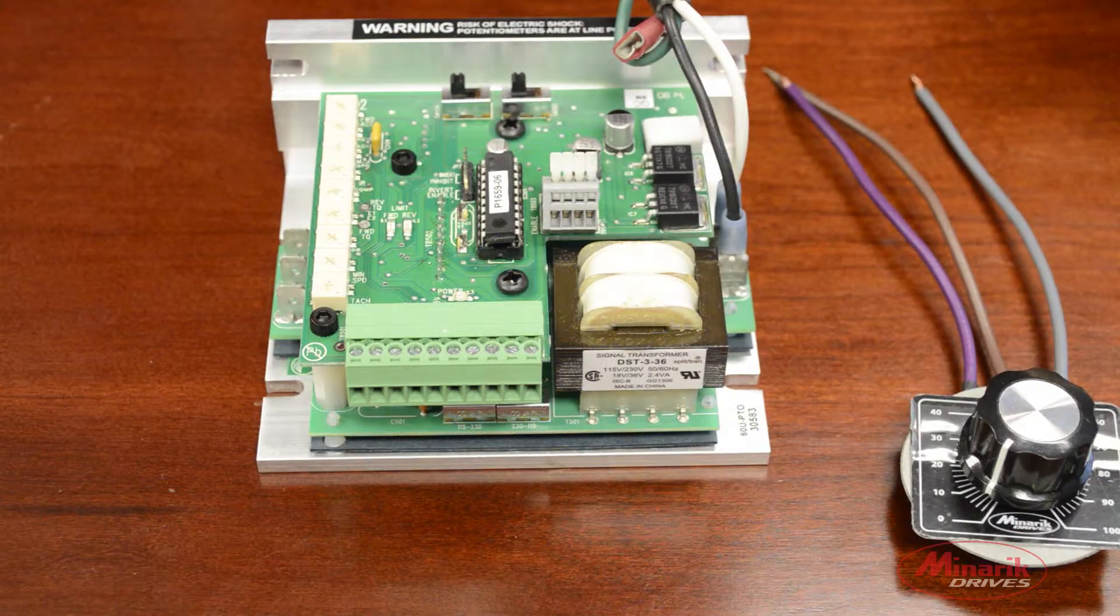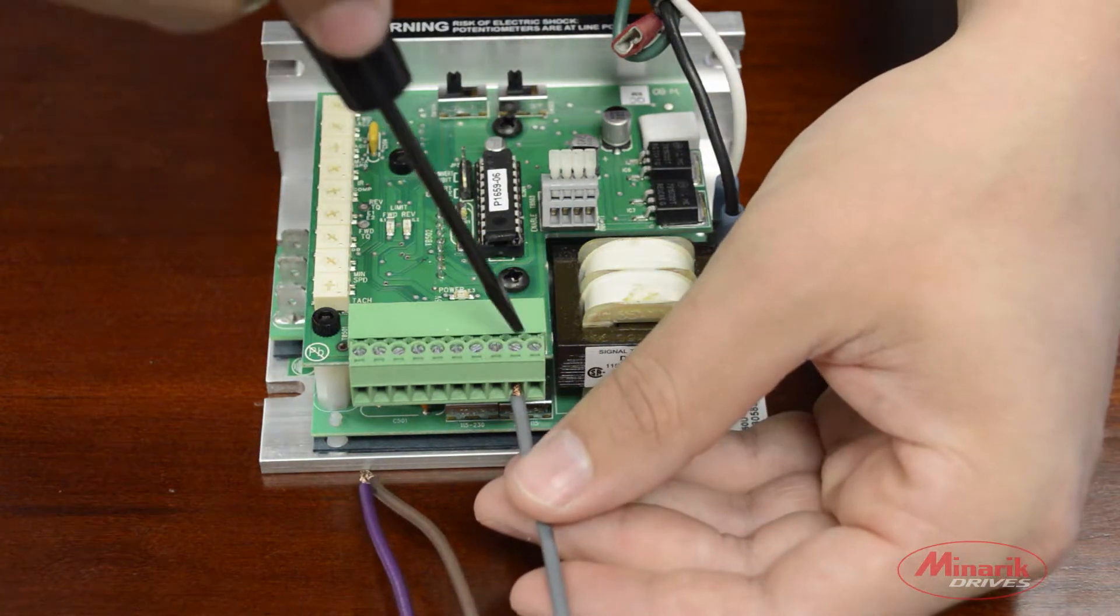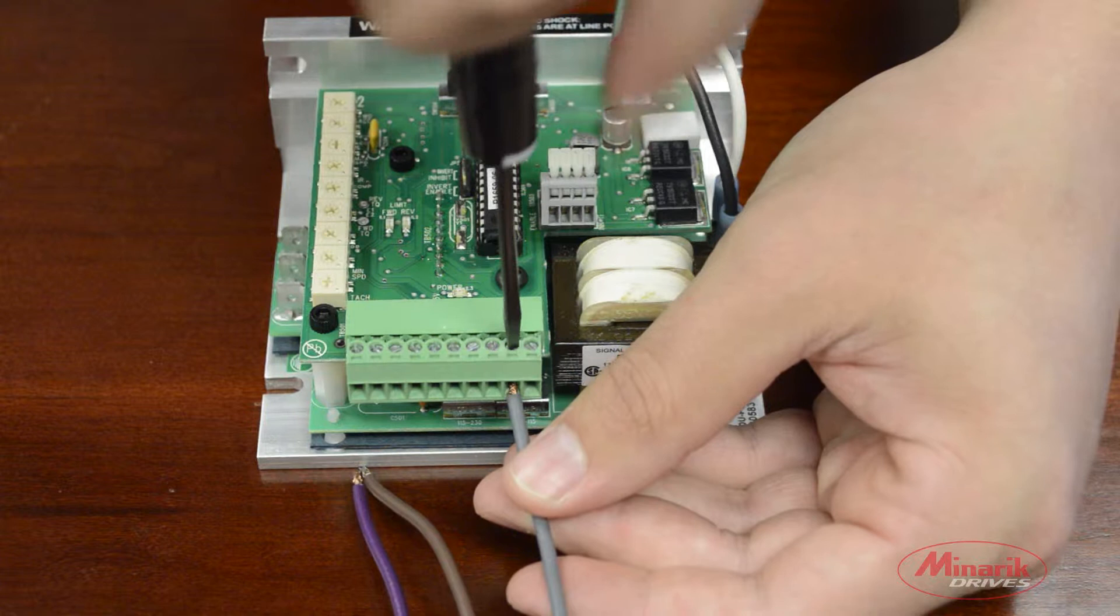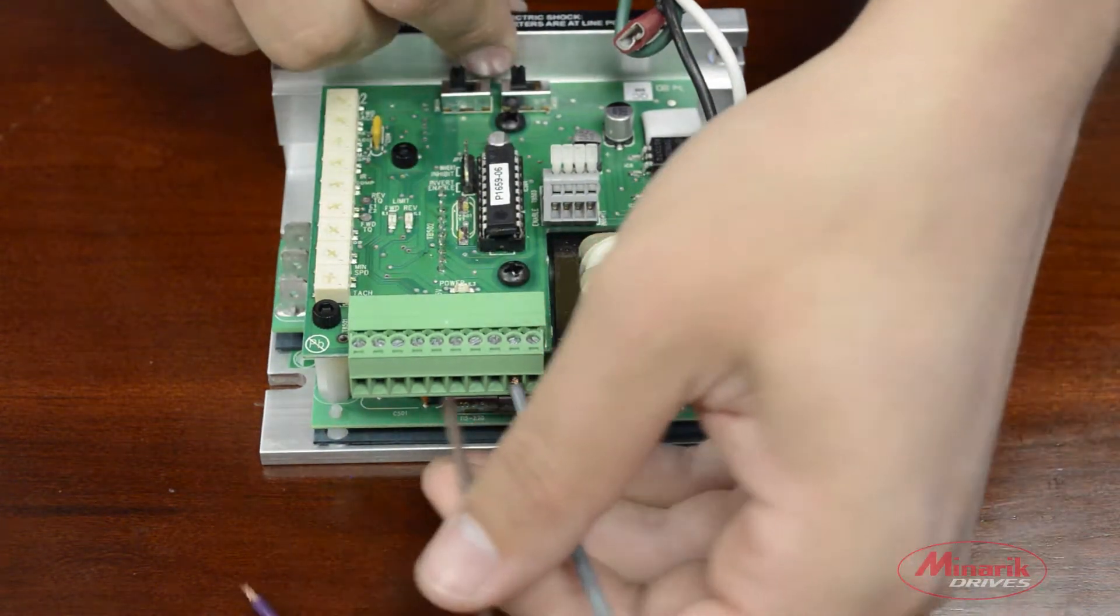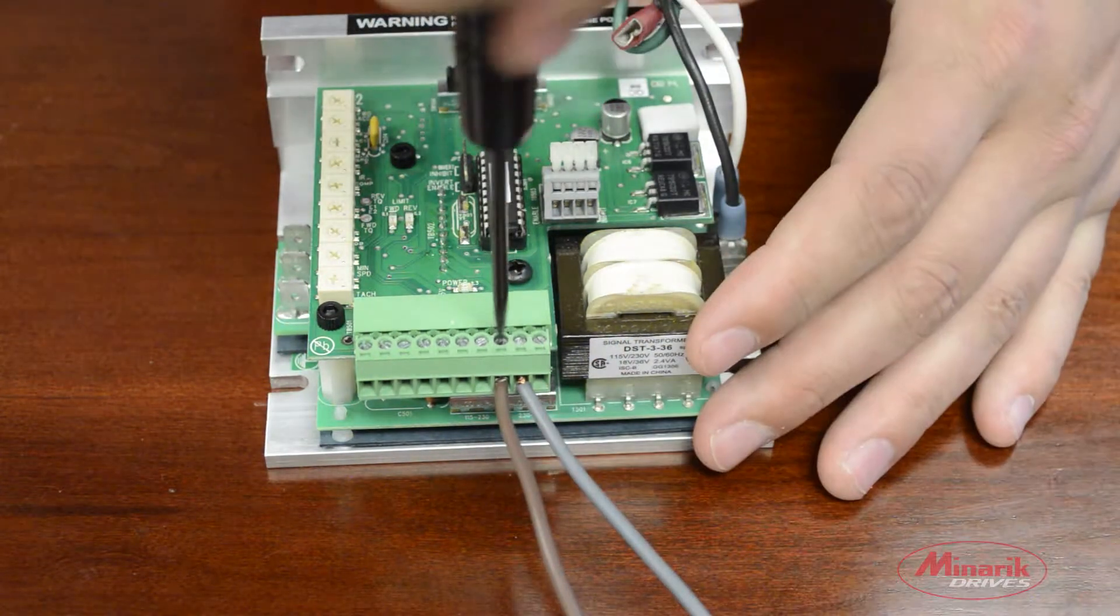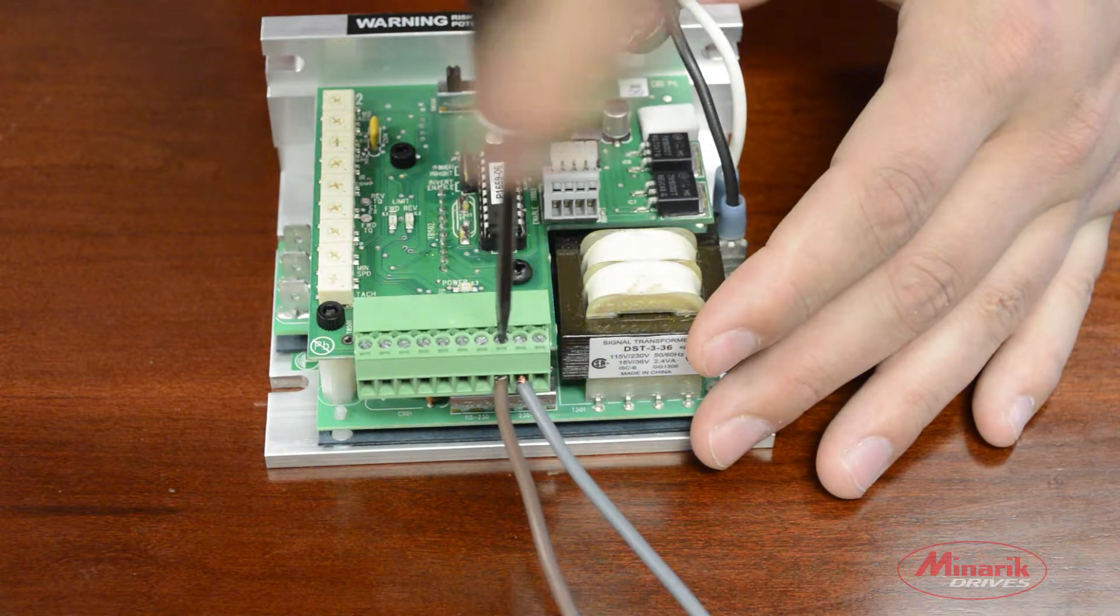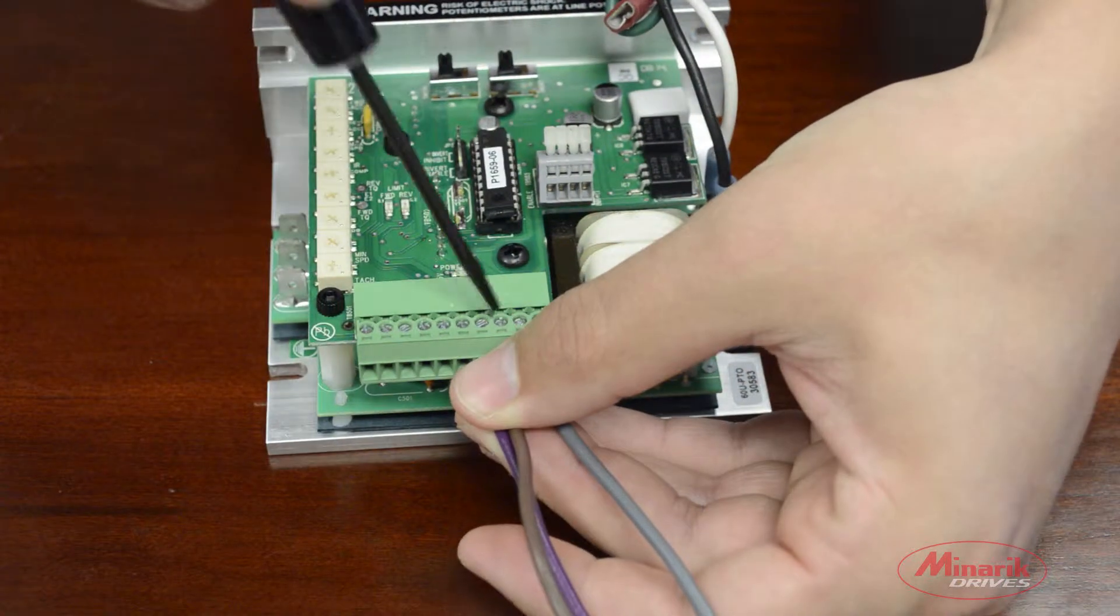Next we'll wire up the drive for bi-directional operation. Take the common wire of the speed pot and put it into S1, the wiper goes into S2, and the positive to S3.